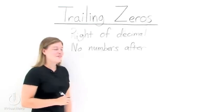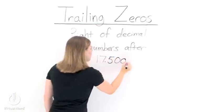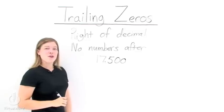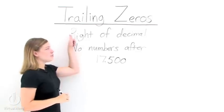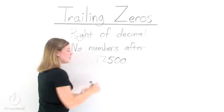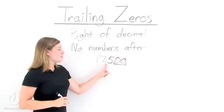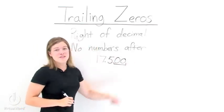Now let's look at some examples. If we have 17.500, where are the trailing zeros? Well, we're looking for any zeros to the right of the decimal that have no numbers after it. So these two zeros right here are trailing zeros. They're to the right of the decimal, and they don't have any numbers after them.